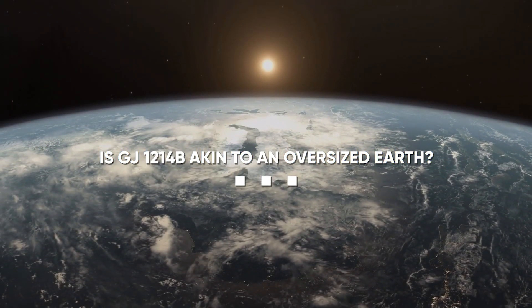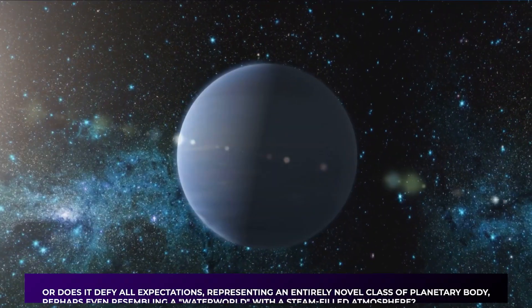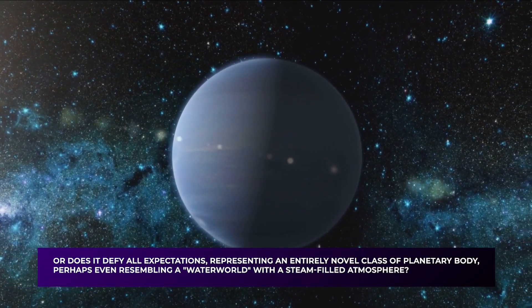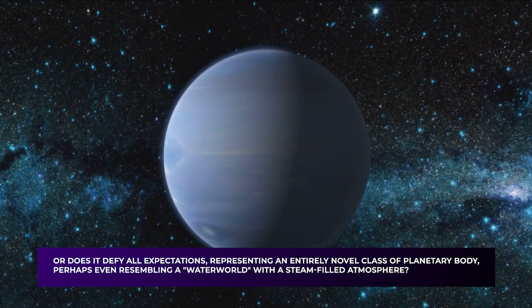Is GJ-1214b akin to an oversized Earth? Could it be a shrunken version of Neptune? Or does it defy all expectations, representing an entirely novel class of planetary body,